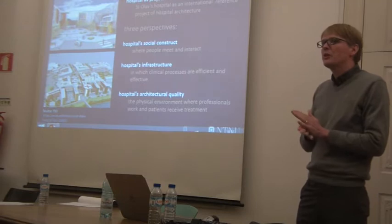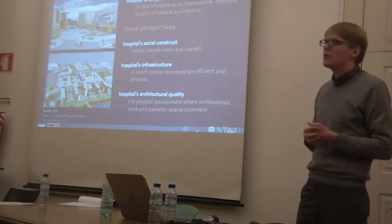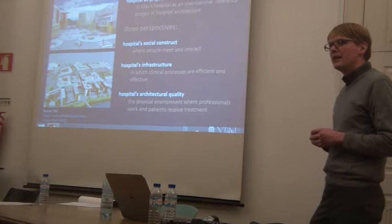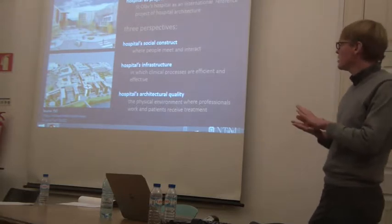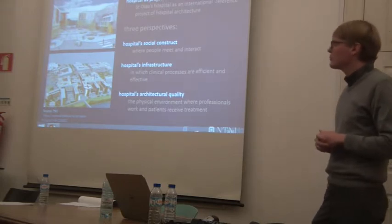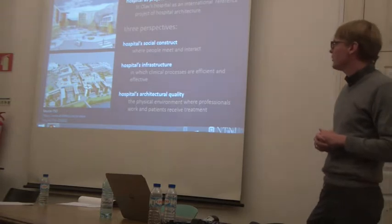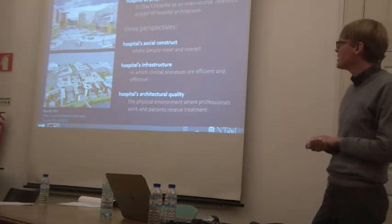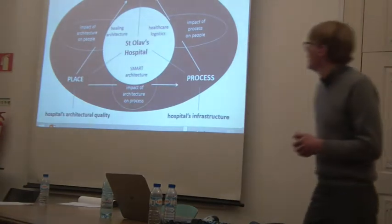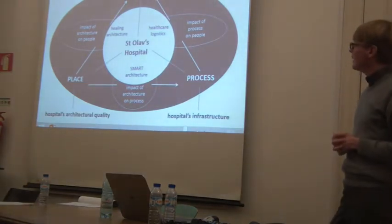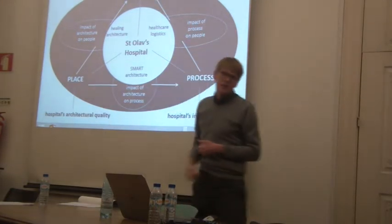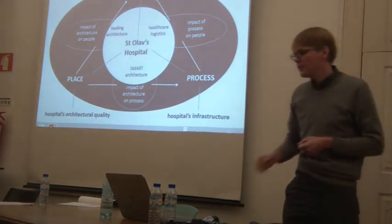We look at the hospital from three perspectives. The first is the hospital as a social construct — a place where people meet and interact. The second is hospital infrastructure — the surrounding in which clinical processes have to be efficient and effective. The third is architectural quality — the physical environment where professionals work and patients receive treatment. These three perspectives are connected: people, process, and place, with the hospital in the middle as a focus point of research.